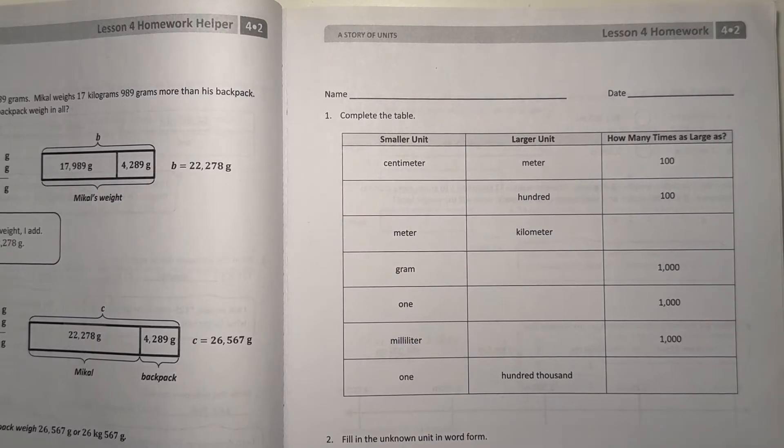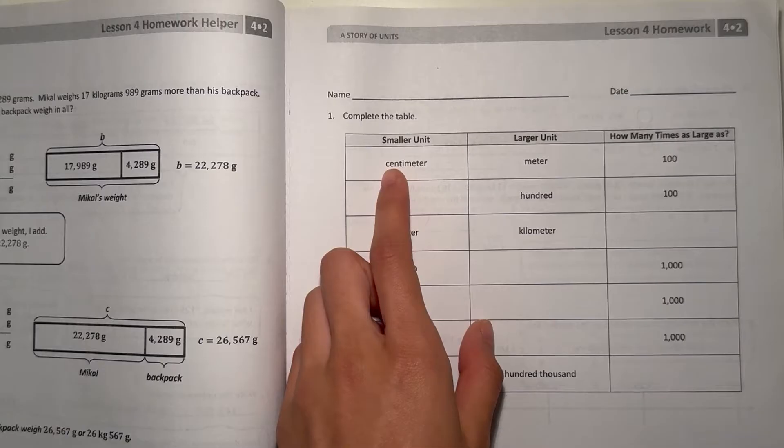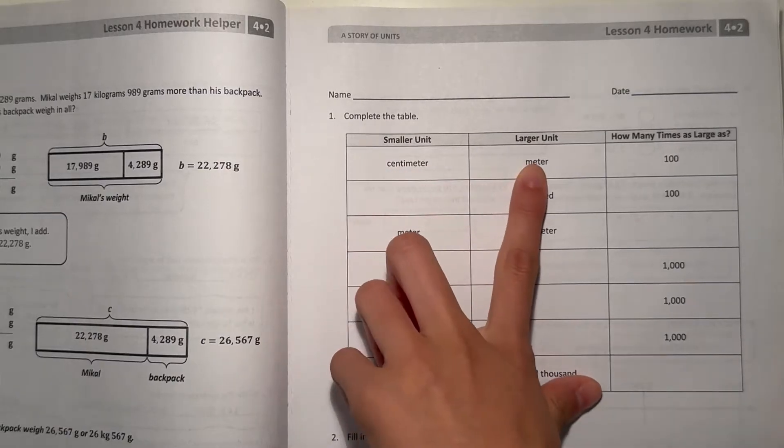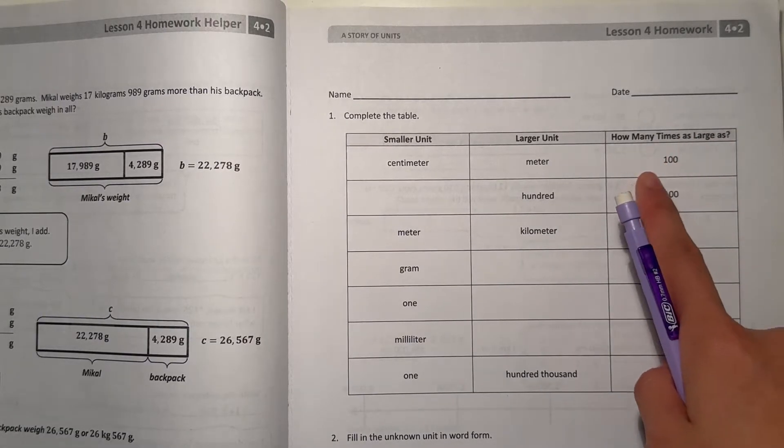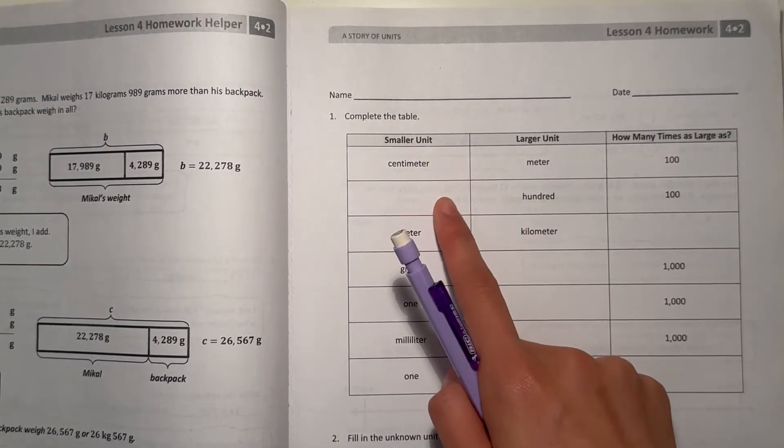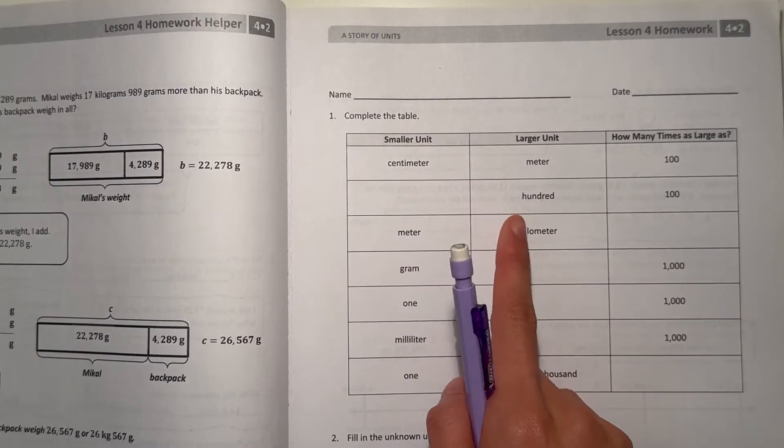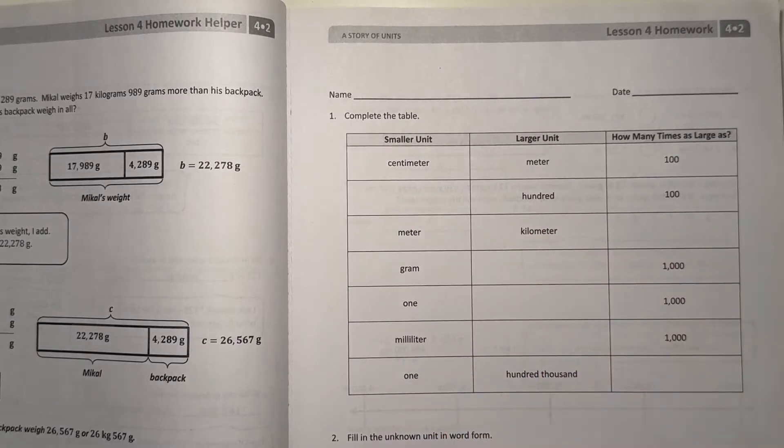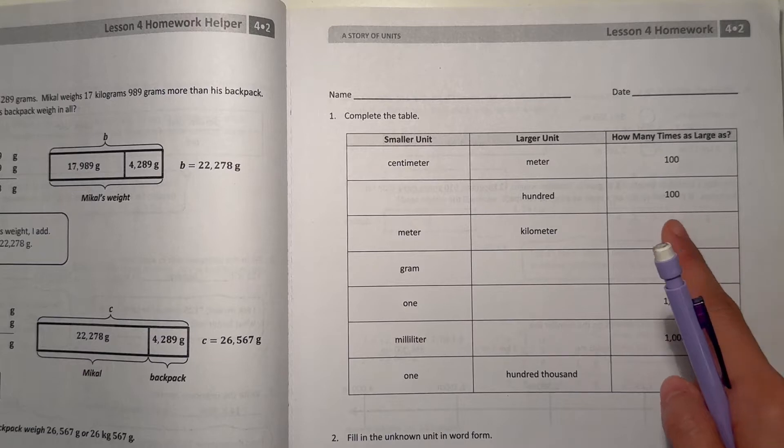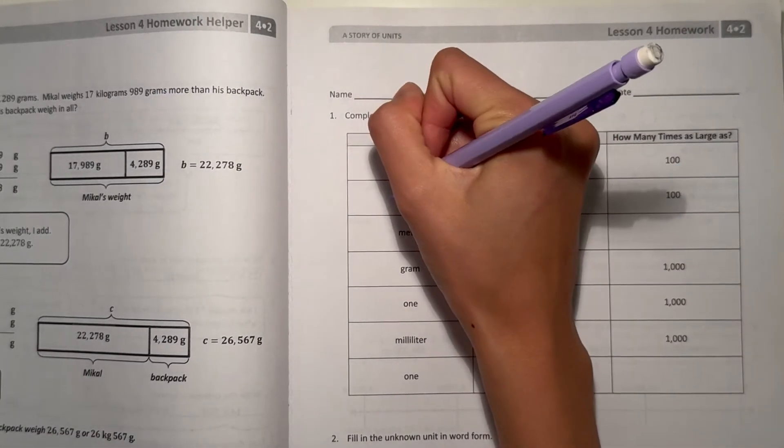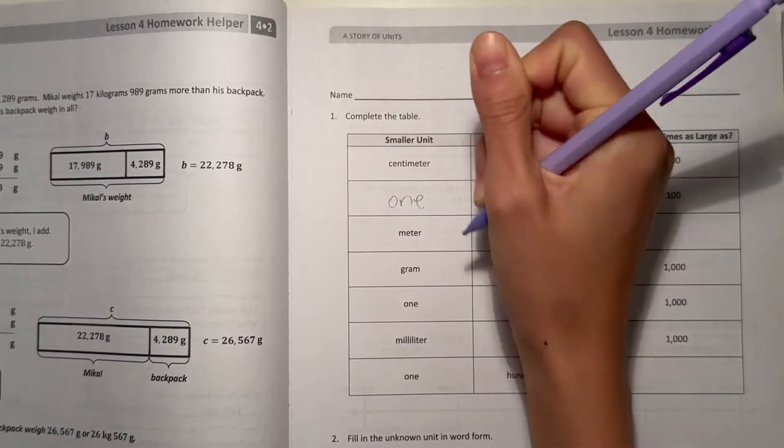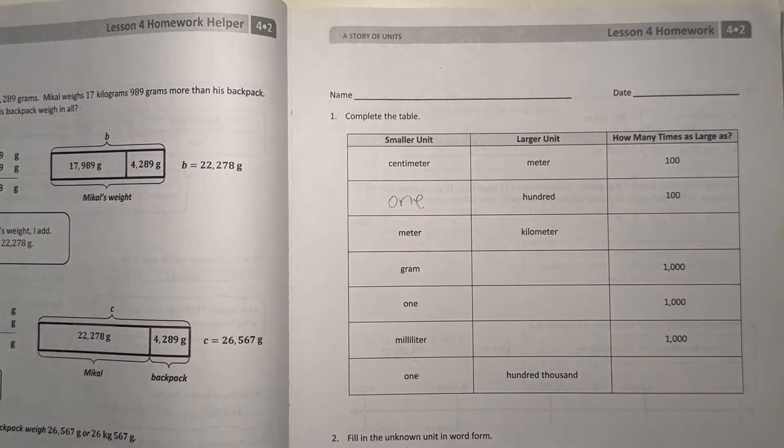Number 1, complete the table. Alright, so our smaller unit is centimeter and our larger unit is meter. So I mean in one meter there's 100 centimeters. So next, we don't know the small unit but we do know the larger unit and how many times as large as. So 100 and 100 here, so then this must be 1. Because 1 is 100 times, or 100 is 100 times as large as 1.